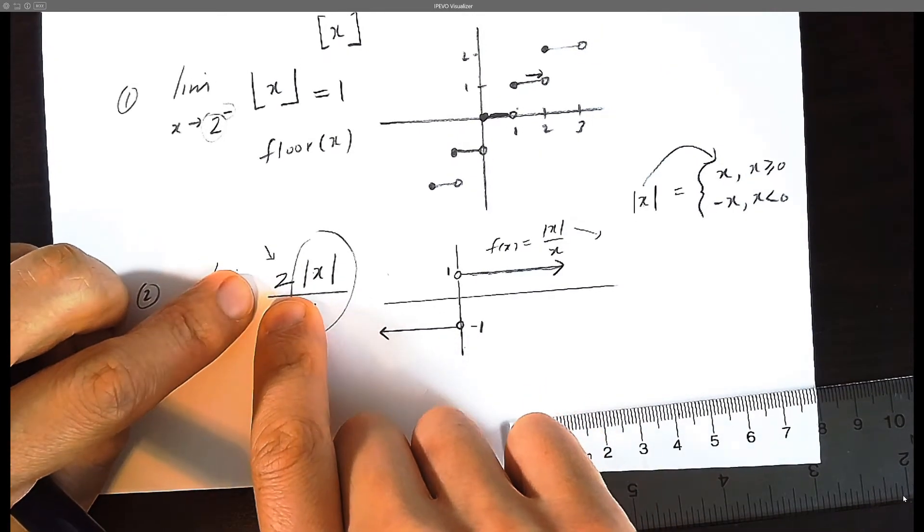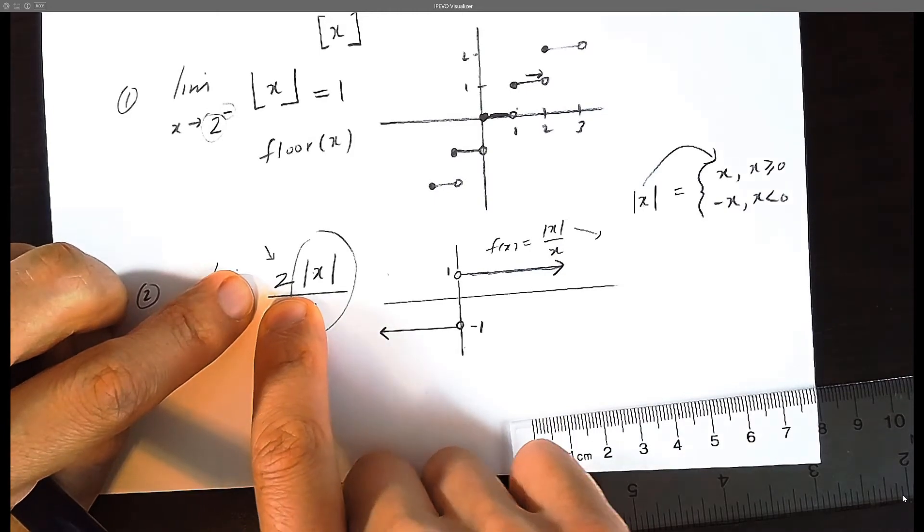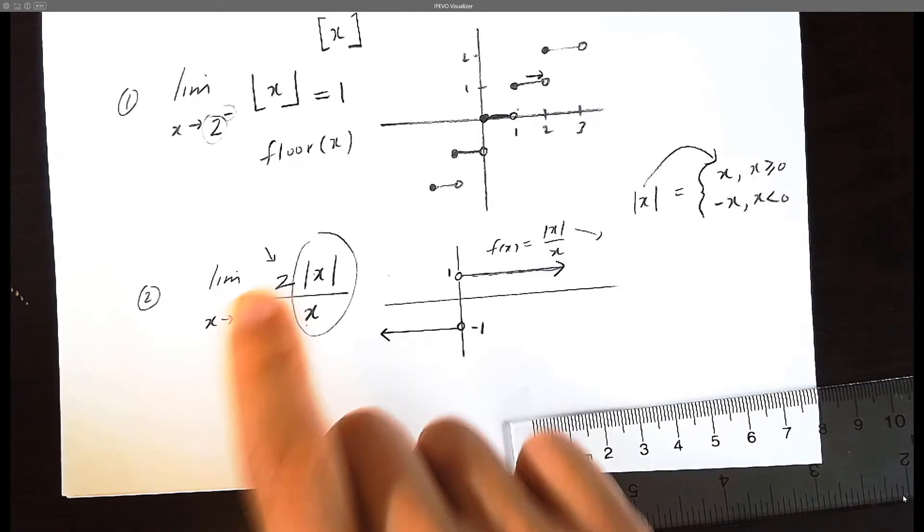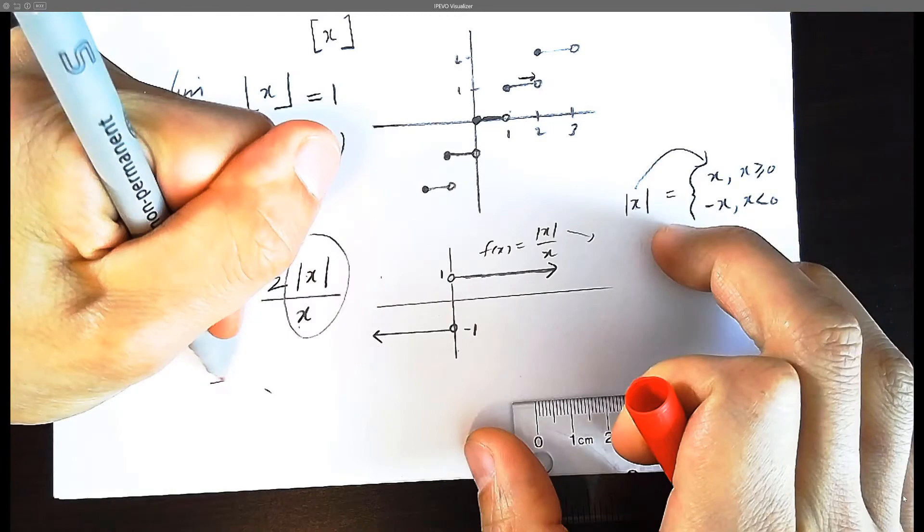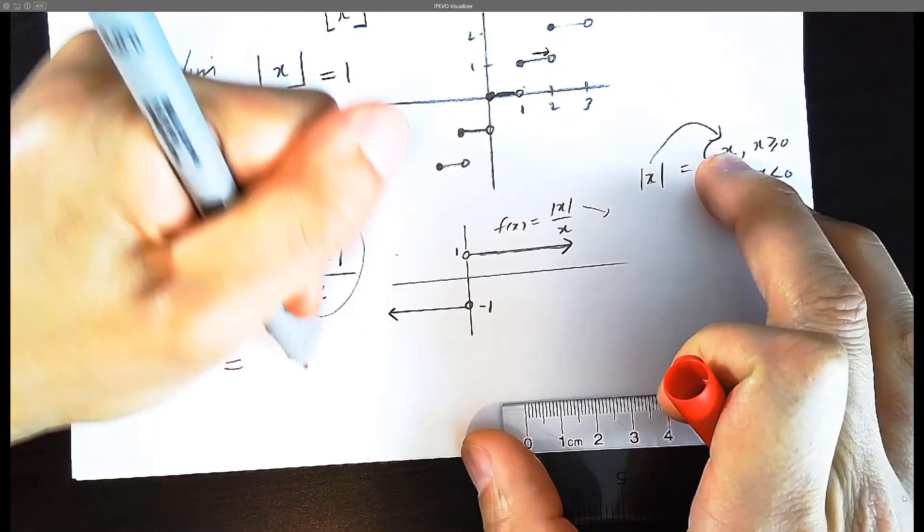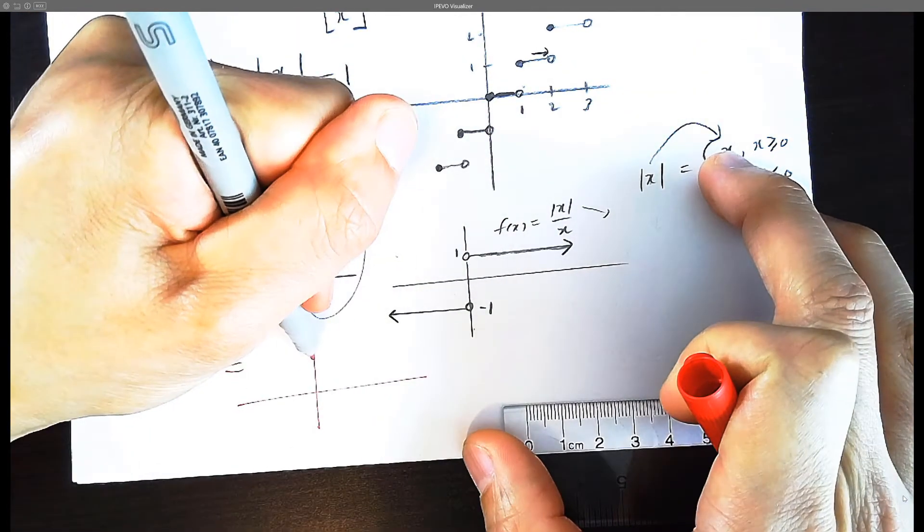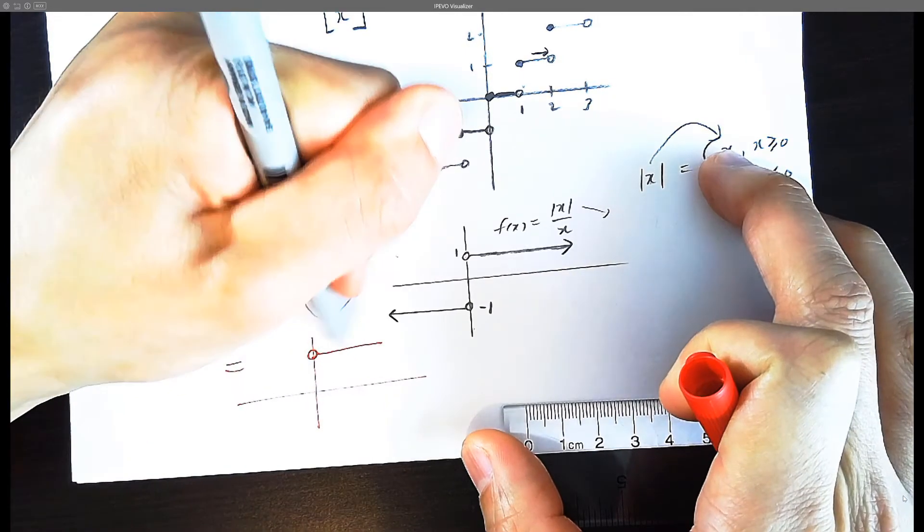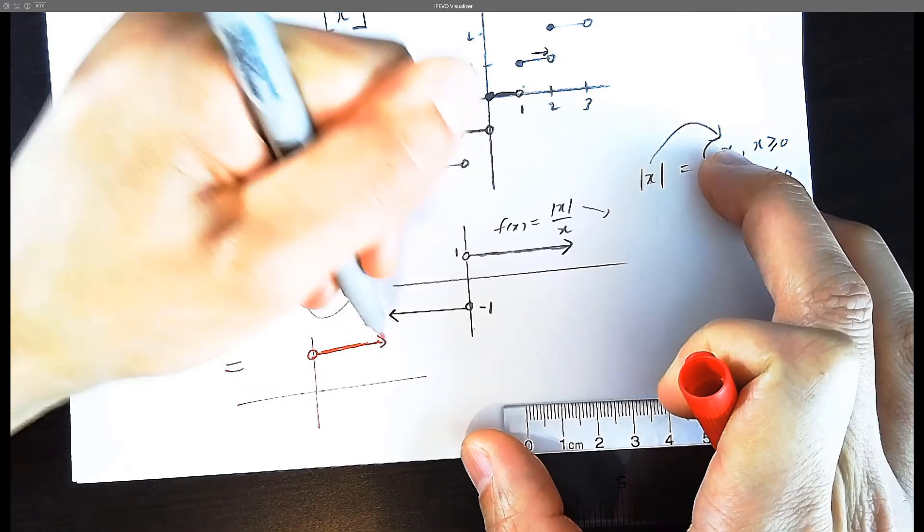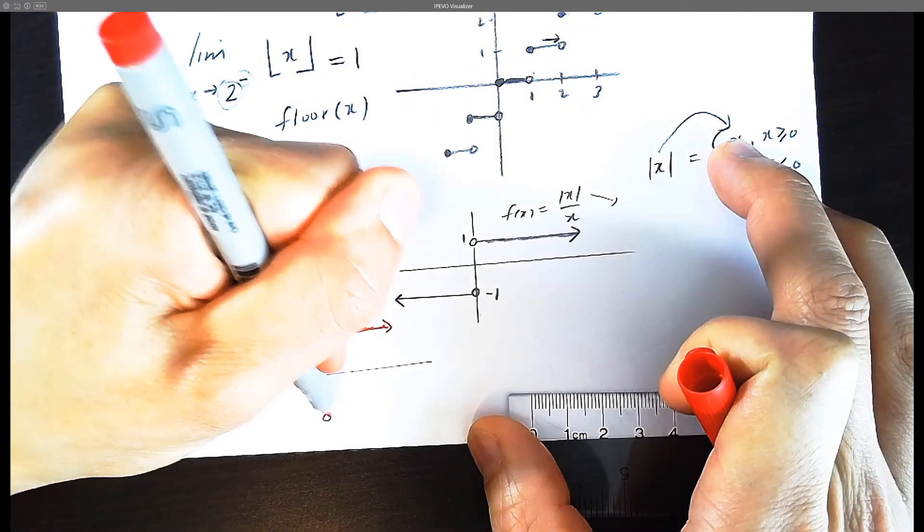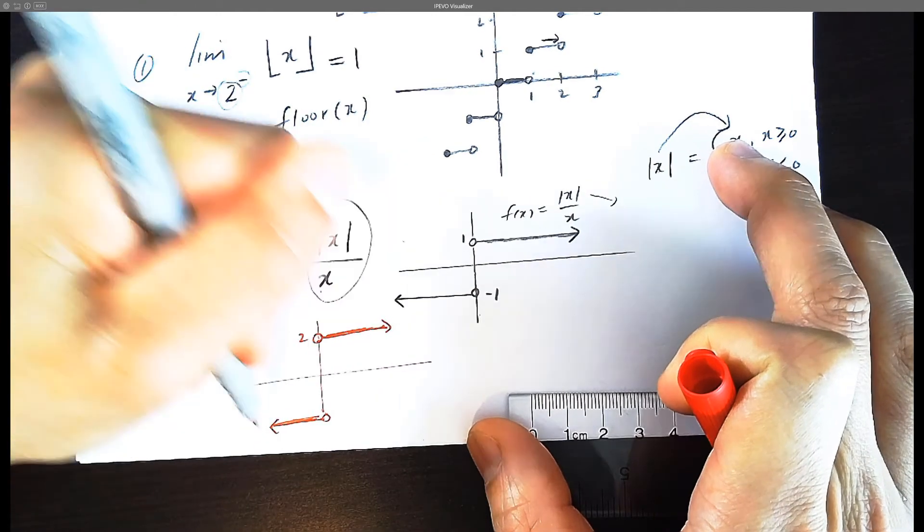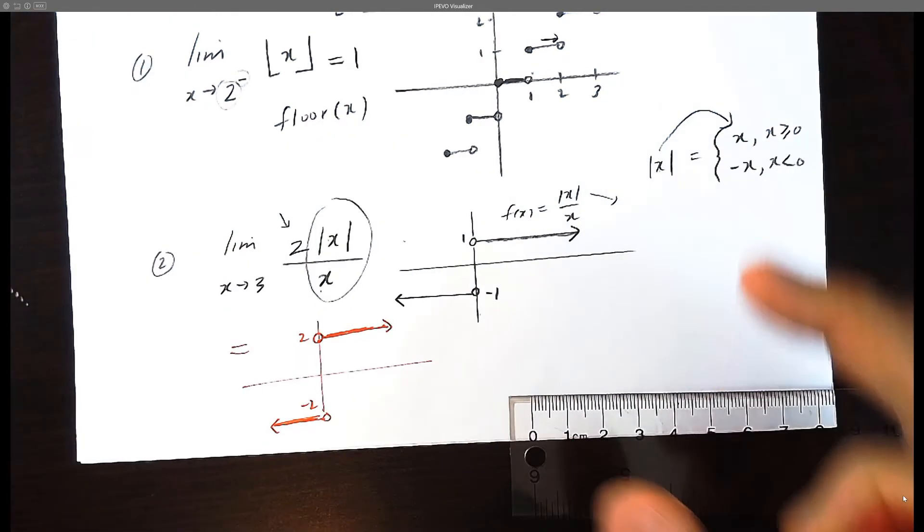Now when you have a two here, think function transformations, two times a graph, it's going to be twice as tall. So the actual answer is going to be hollow circle. It's going to be positive two. And then we have a negative two on the bottom here. So this is the graph.